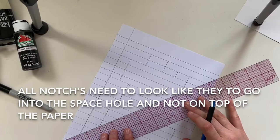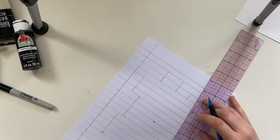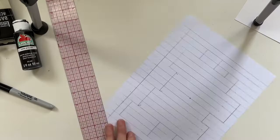It would look like it's going on top of the paper. So all of our notches need to be going into the hole where space is going to be. So just think of that when you're checking all your notches.